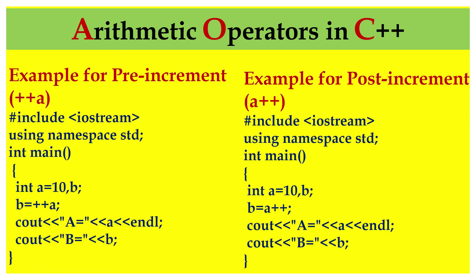Here is an example for pre-increment and post-increment. We have declared a variable of integer data type A equal to 10, and declared one more variable B. Next step, we assign B equal to ++A. So ++A means the value A is incremented by 1 first, so now B equals 11 and A equals 11. Both A and B are equal to 11.